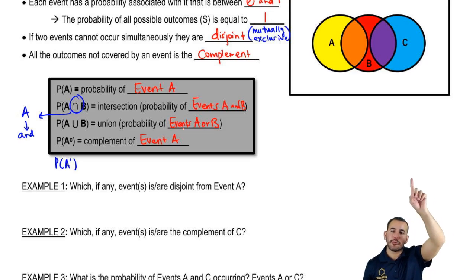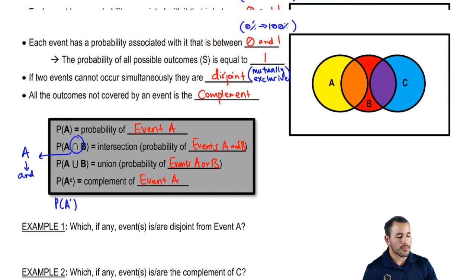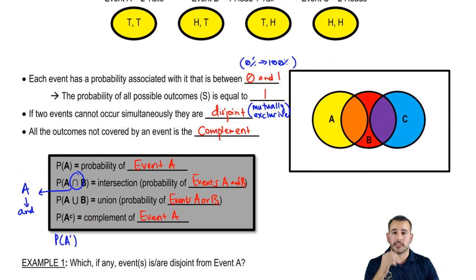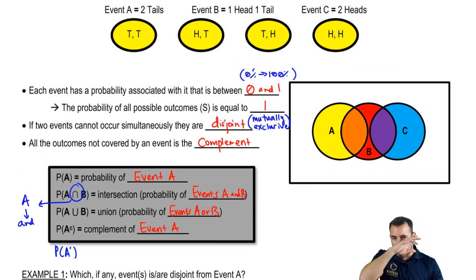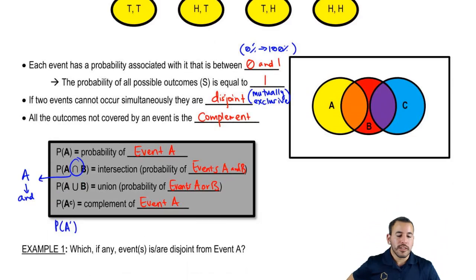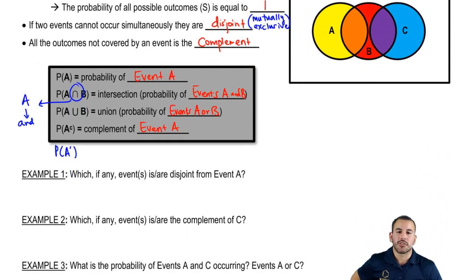Cool. So now I have a little Venn diagram here. We're going to be referring to that to talk about our next three examples. And these examples are just conceptual questions. They're not really anything super applied. It's just to make sure that we have these ideas down because I'm going to be using and referring to them once we move on to subsequent topics. So which of any events are disjoint from event A? So remember event A back up here was what? It was two tails, right? So event A is two tails. And then we have event B and event C. So which of those are disjoint from A?